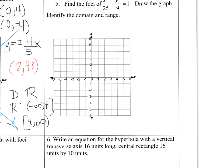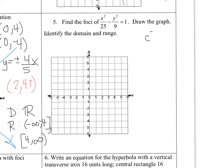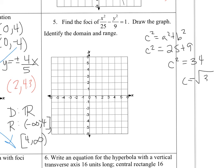For the last problem, find the foci. Using c squared equals a squared plus b squared: c squared equals 25 plus 9, so c squared equals 34 and c equals the square root of 34. Since x squared is positive, this hyperbola goes side to side. The foci are in the same direction as the vertices, so the foci are at (-√34, 0) and (√34, 0).